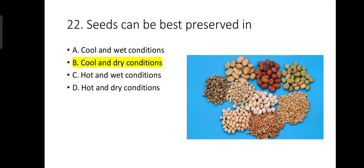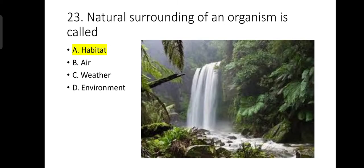Number 22: Seeds can be best preserved in cool and dry conditions. Number 23: The natural surrounding of an organism is called habitat. The question was incomplete, as they asked 'natural surrounding is called,' which led to confusion because 'environment' also becomes a correct option. The question has been rephrased to: the natural surrounding of an organism is known as habitat.